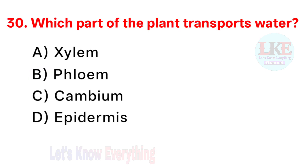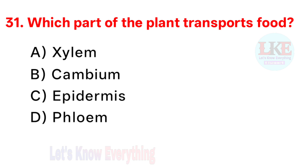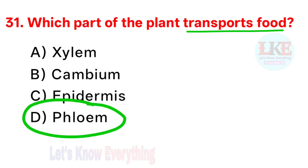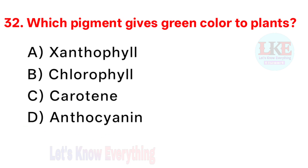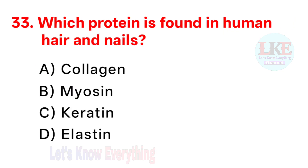Question number 30: which part of the plant transports water? Right answer option A: xylem. Question number 31: which part of the plant transports food? Right answer option D: phloem. Question number 32: which pigment gives green colour to plants? Right answer option B: chlorophyll. Question number 33: which protein is found in human hair and nails? Right answer option C: keratin.